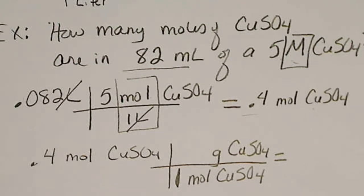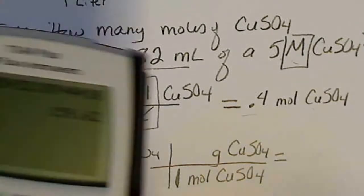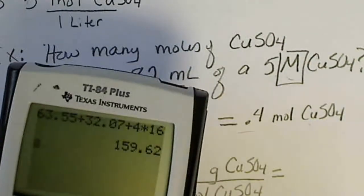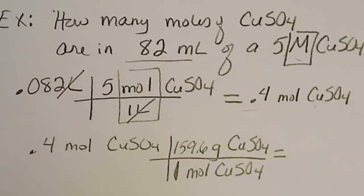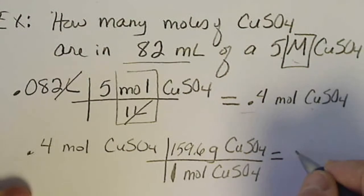So copper weighs 63.55 plus there's one sulfur. Sulfur weighs 32.07 plus there are four oxygens. So the molar mass of copper sulfate is easy to calculate, 159.6 grams, and we could multiply that by 0.4.